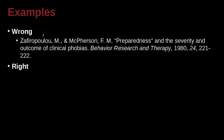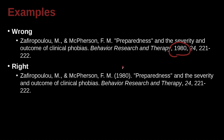Zapfrupolu M.N. and McPherson F.M. — last name first, last name first. 'Preparedness and the severity and outcome of clinical phobias,' Behavior Research and Therapy. Clearly, the date is in the wrong position. The date needs to come right after the last period following the author's name — then parentheses with the year, then a space after that period. The journal name and volume number are in italics, but the page numbers are not italicized.